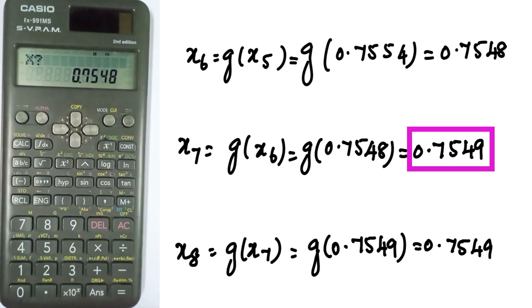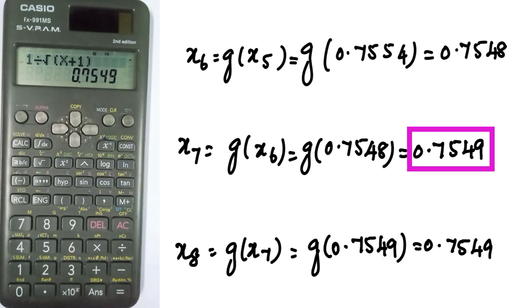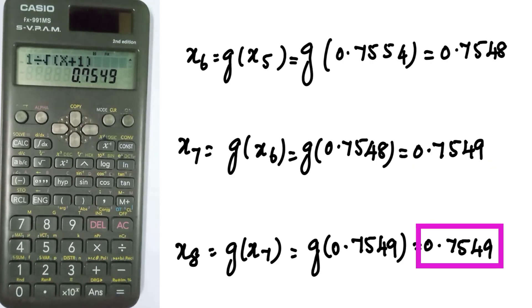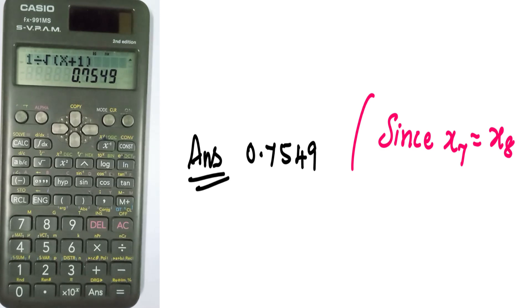The answer is 0.7549. The iterations have converged because consecutive values agree to 4 decimal places. So the next step will be stopped and the root is 0.7549. Thank you.